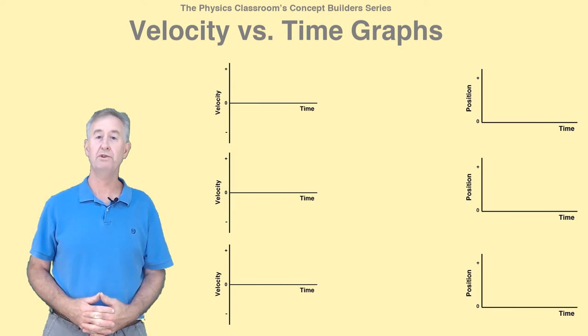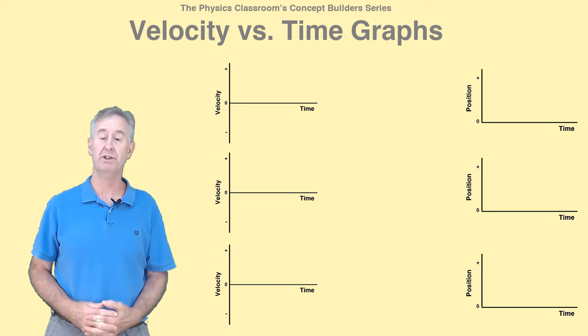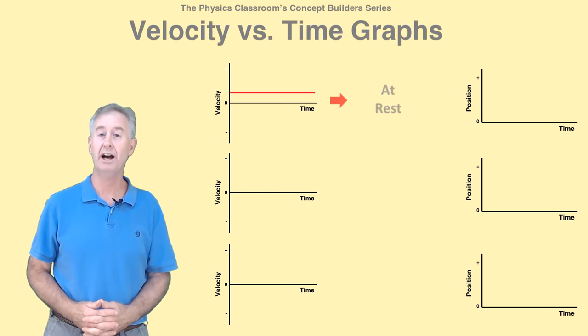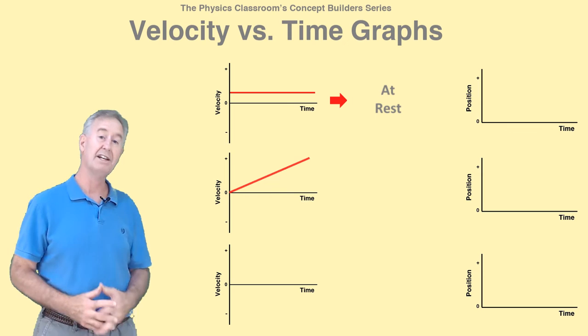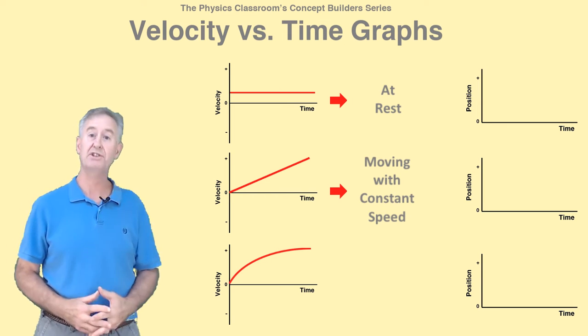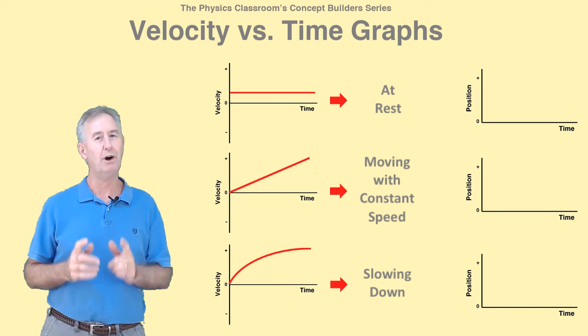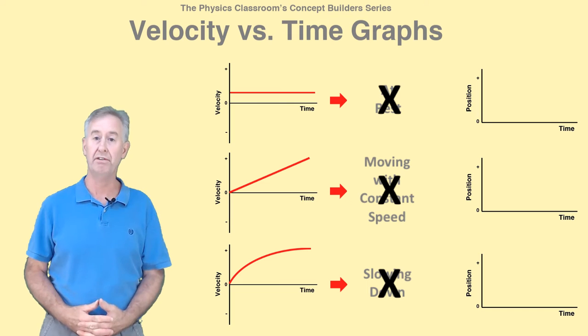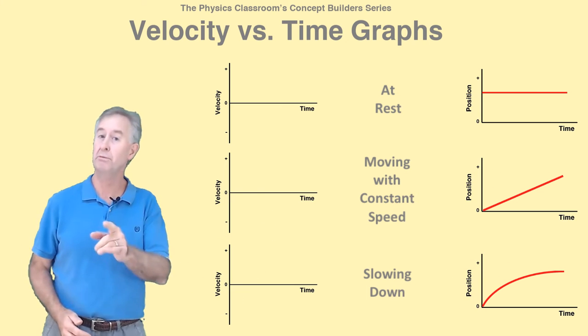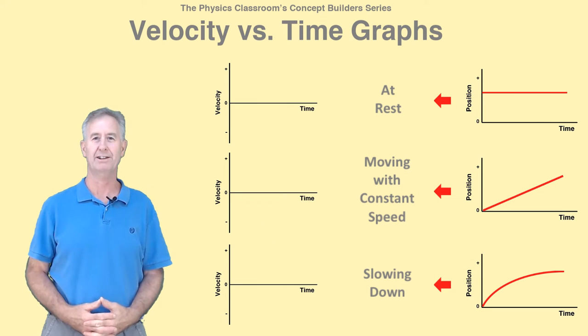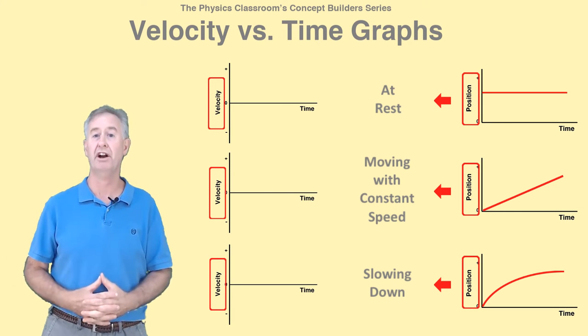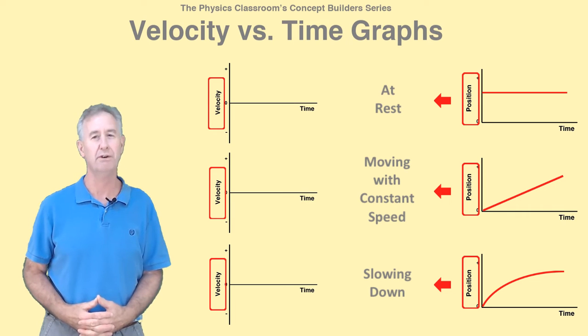It's not unusual to confuse VT graphs with position-time graphs, or PT graphs. For instance, a student could see this type of graph and say that's an object that's at rest, or this type of graph and say that's an object moving with a constant velocity, or this type of graph and say that's an object that's slowing down. But all these statements are incorrect and result from confusing the two types of graphs. If we were to move all these lines over to the position-time graph, they would all be correct. So when you get a graph question, check the vertical axis first to see what's listed there, then use the right set of rules for that graph.